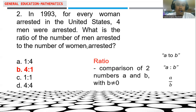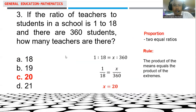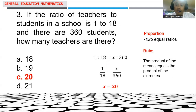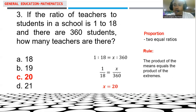Let's try number three. If the ratio of teachers to students in a school is 1 to 18, and there are 360 students, how many teachers are there? This is an example of a proportion problem. When we say proportion, this is actually the equality of two ratios — you should have two given ratios that are equivalent or equal.